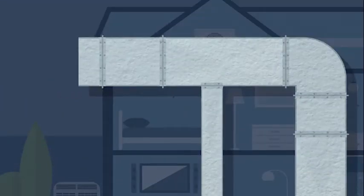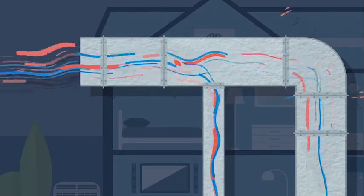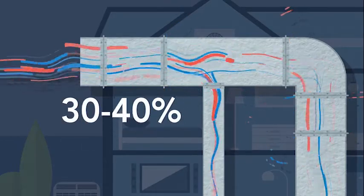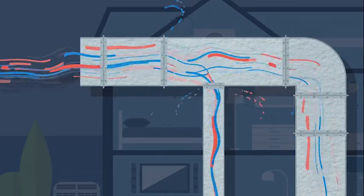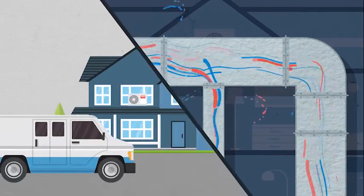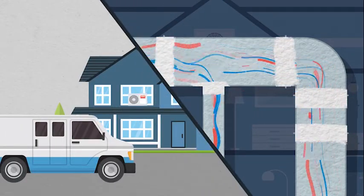The ducts that carry heated and cooled air to the rooms of your house are usually out of sight. Unfortunately, many ducts leak 30 to 40% of the warm or cool air, meaning more energy is needed to achieve your perfect air temperature. Schedule an annual tune-up by a certified technician to check your ducts and make sure your heating and cooling system is not wasting money.